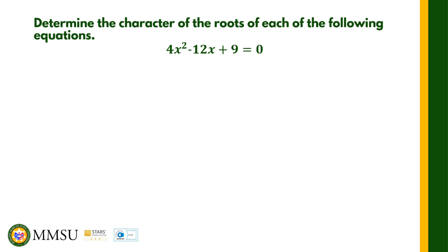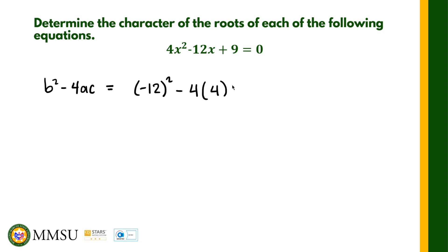Determine the character of the roots of 4x squared minus 12x plus 9. The discriminant b squared minus 4ac: this is already in standard form, so substituting directly — negative 12 squared minus 4 times 4 times 9. That gives us 144 minus 144, which equals zero.